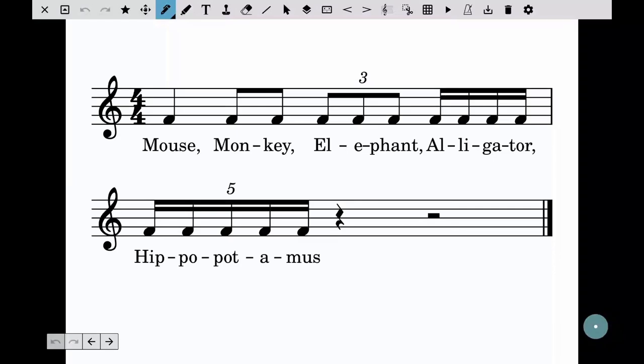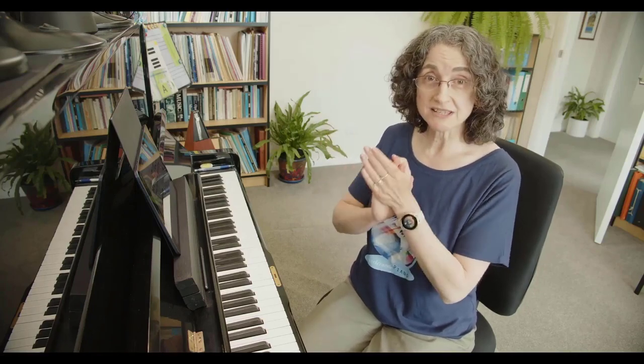So how can we make up some exercises with those? First off, you could try just clapping the beat and saying the words. So let's go mouse, monkey, elephant, alligator, hippopotamus. So there I was actually clapping the syllables as well. So if I just clap my beat and now I'll say the words. So I've got mouse, monkey, elephant, alligator, hippopotamus. Like that.